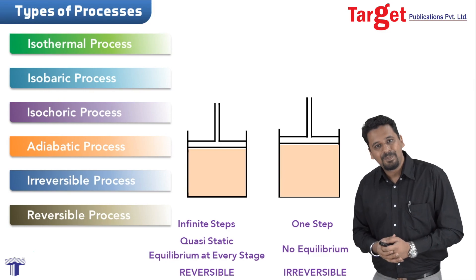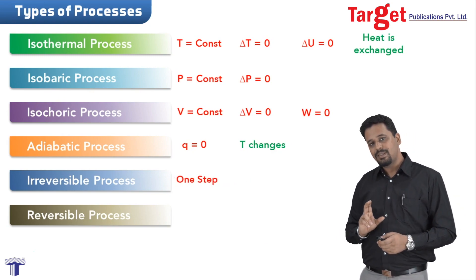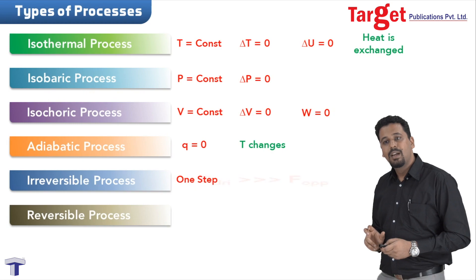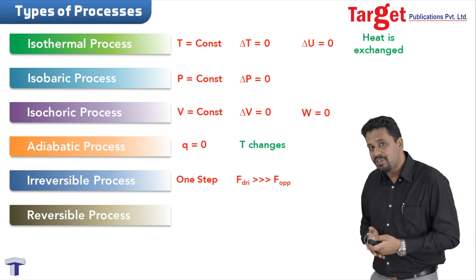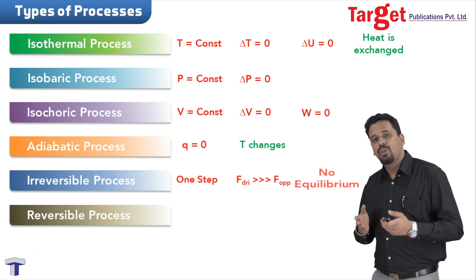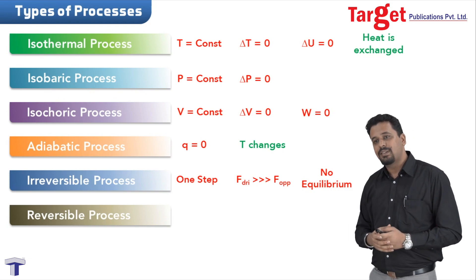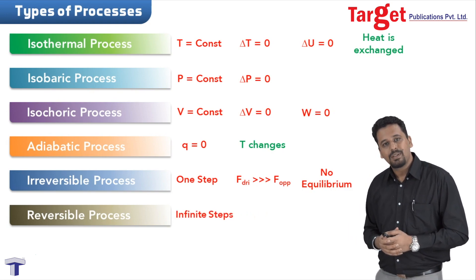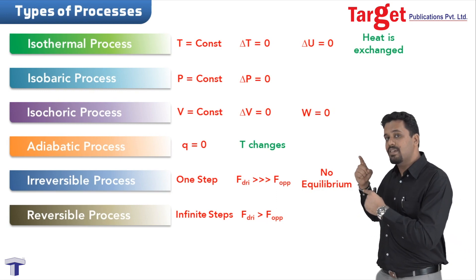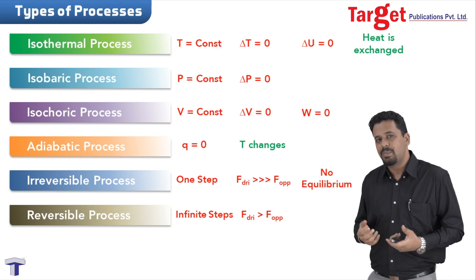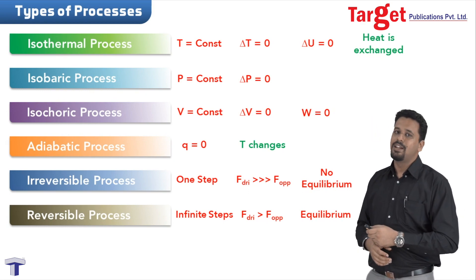In an irreversible process, it is a one-step process where the driving force is significantly greater than the opposing force, and there is no equilibrium. In a reversible process, it happens in infinite number of steps, the driving force is just slightly greater than the opposing force, and there is equilibrium at every single stage.